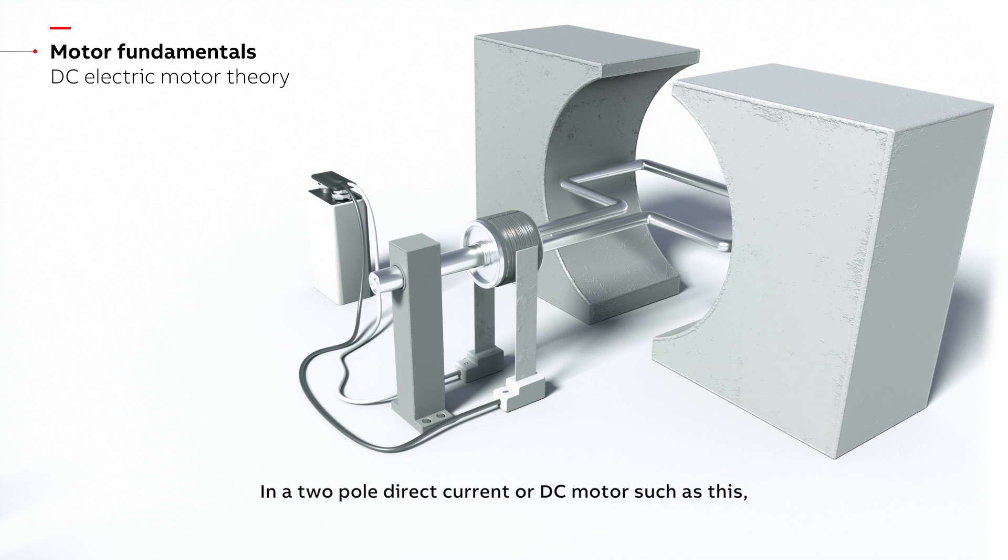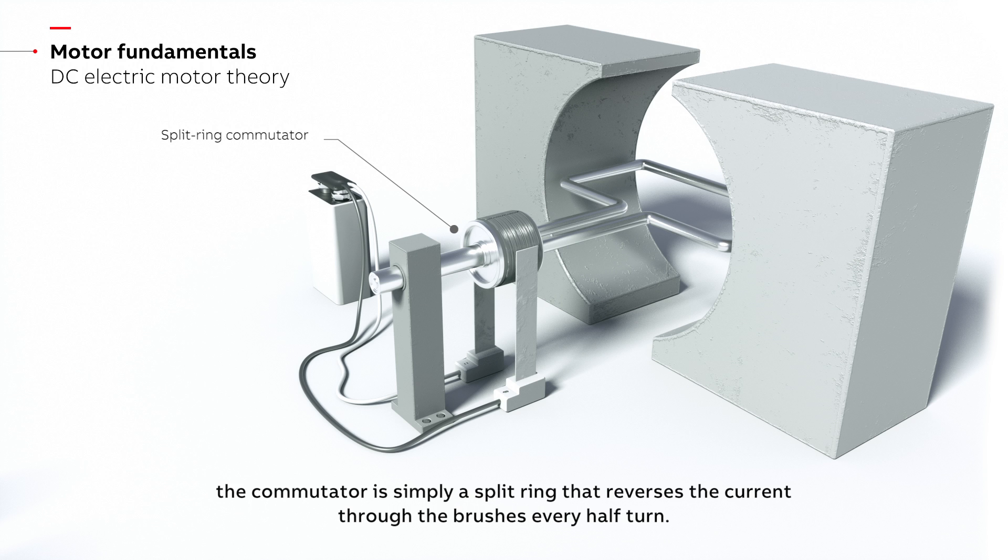In a two-pole direct current or DC motor such as this, the commutator is simply a split ring that reverses the current through the brushes every half turn.